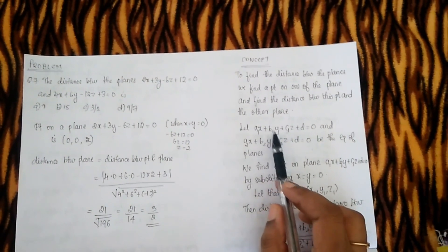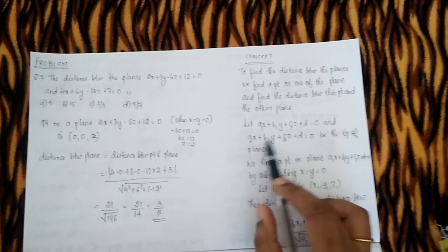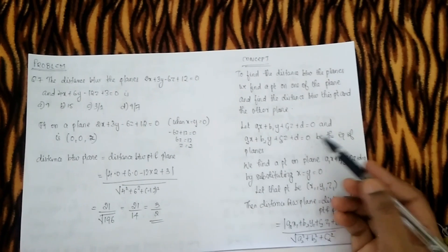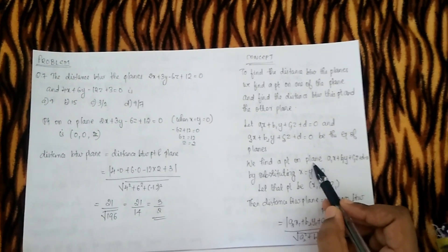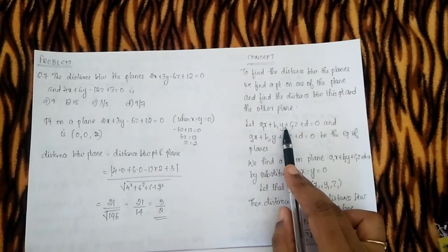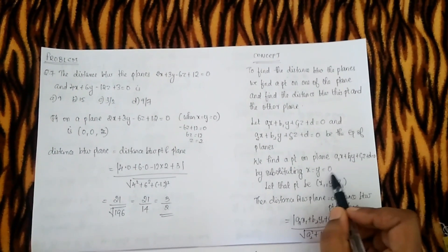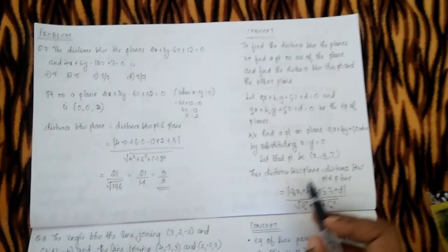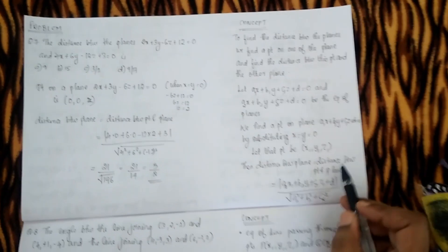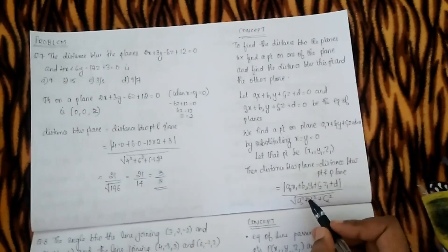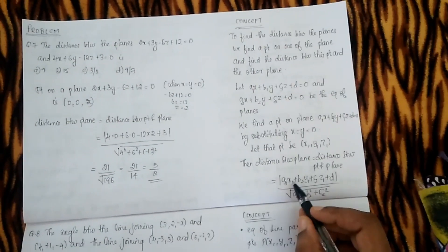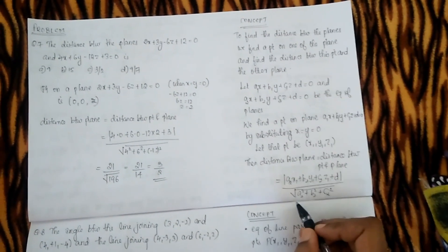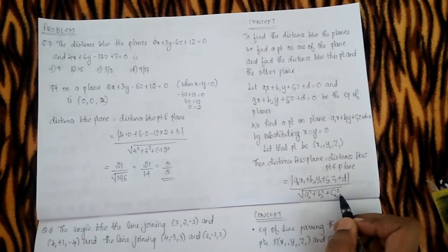Let a1x + b1y + c1z + d = 0 and a2x + b2y + c2z + d = 0 be the equations of the planes. The distance formula uses the expression with the point substituted into the second plane divided by the square root of a2² + b2² + c2².